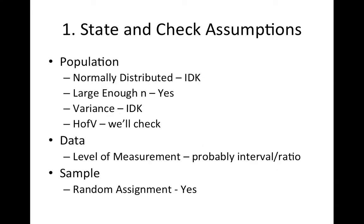In ANOVA, we'll go ahead and state and check our assumptions. Assumptions about our population: Is it normally distributed? I don't know, frankly. Are the distribution of scores of depression normally distributed? I don't know. Do I have a large enough N so that the sampling distribution of the sample mean will take on roughly a normal shape? The answer is yes. I don't know variance, and we'll check homogeneity of variance.